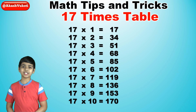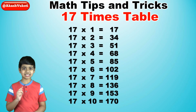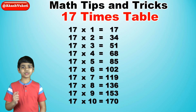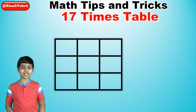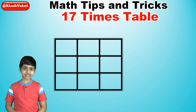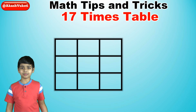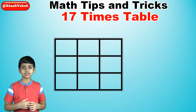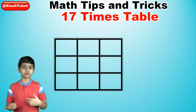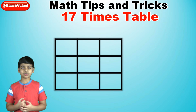Now we can begin learning this trick for the 17 times table. First, we will draw out our tic-tac-toe grid as you can see here. Next, for the 1's digits, we'll just write the numbers from 1 to 10. We start from the top right corner and move down to the bottom, and then we do the same for the middle column and then for the left column.